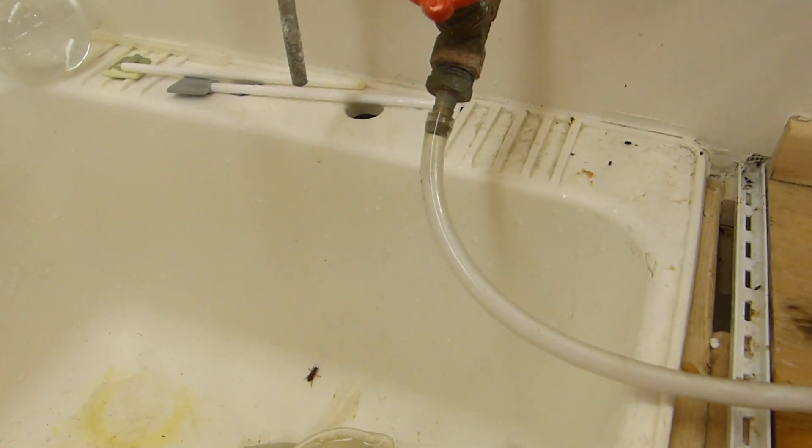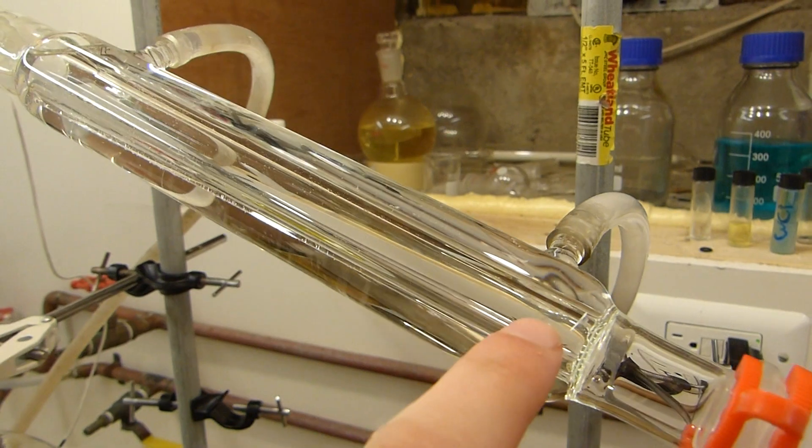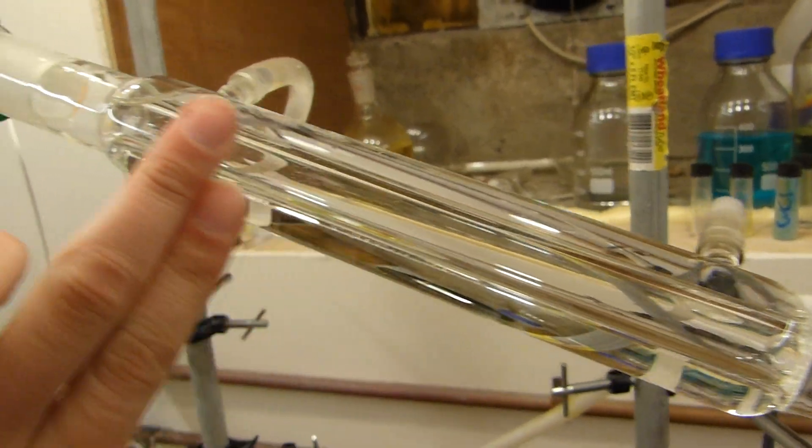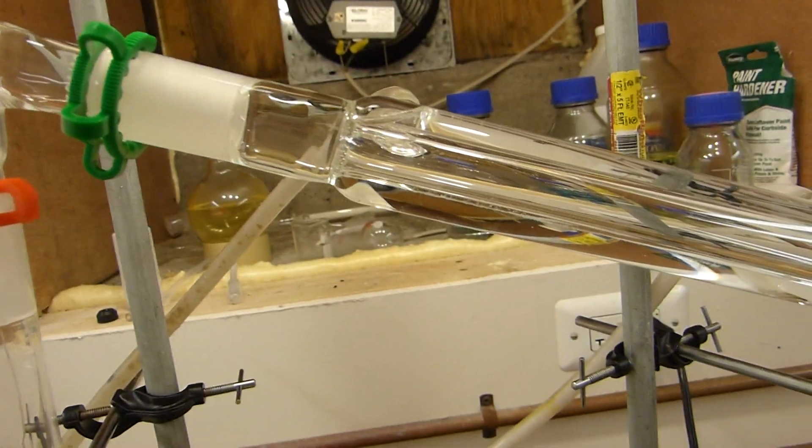Anyway, so the water line there comes from that valve and runs up here. It's hooked up to the bottom of the condenser. Always water in down here and water out up here. That way you have a much colder region here and it gradually gets warmer as you get to the top. It's just good practice. There's a lot of reasons behind that.